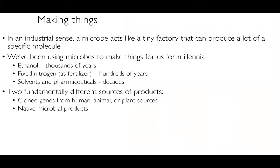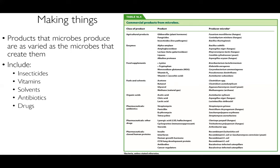There are two fundamentally different sources of products: cloned genes from human, animal, or plant sources, or native microbial products — either taking something from a different organism and sticking it inside a microbe to make it, or something microbes naturally make on their own. We've been using a wide variety of products produced by microbes for many years, including insecticides, vitamins, solvents, antibiotics, and drugs. This table summarizes a short list of things we use on a given basis, whether you know it or not, that are essentially produced from microbes — things you might not think of, such as fungicides or insecticides, but we benefit greatly from in our agriculture.